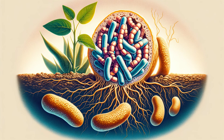Rhizobium forms symbiotic relationships with legumes, e.g., beans and peas, to fix nitrogen from the air into a form that plants can use for growth. This process is crucial for soil fertility and agriculture.